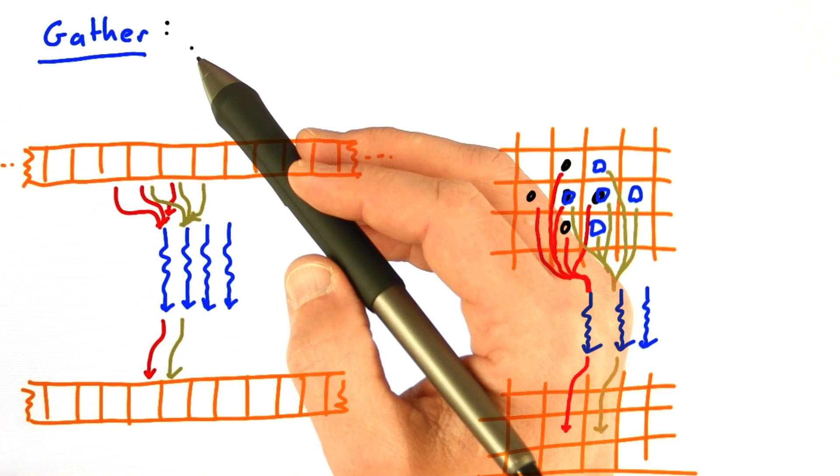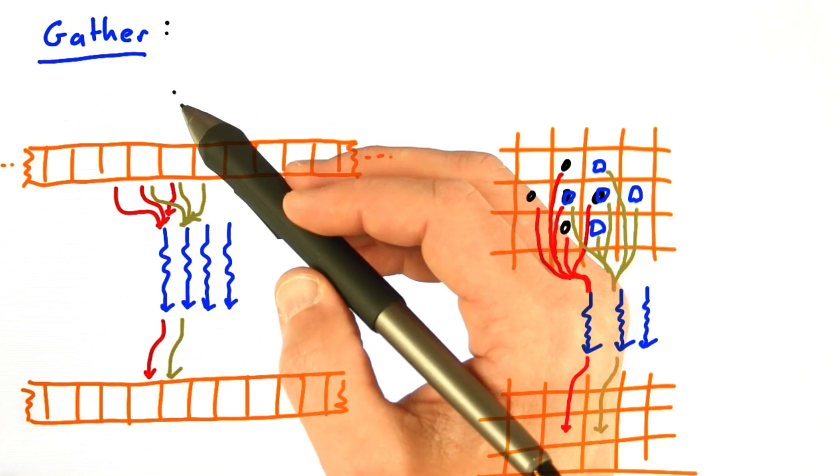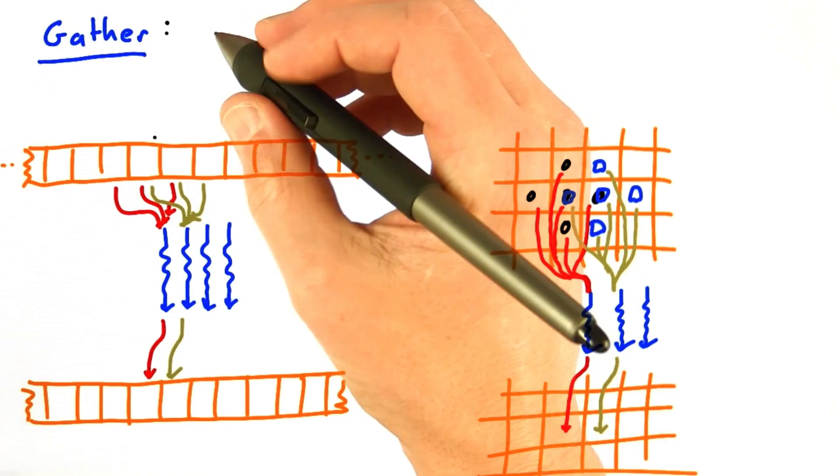This operation is called a gather, because each calculation gathers input data elements together from different places to compute an output result.